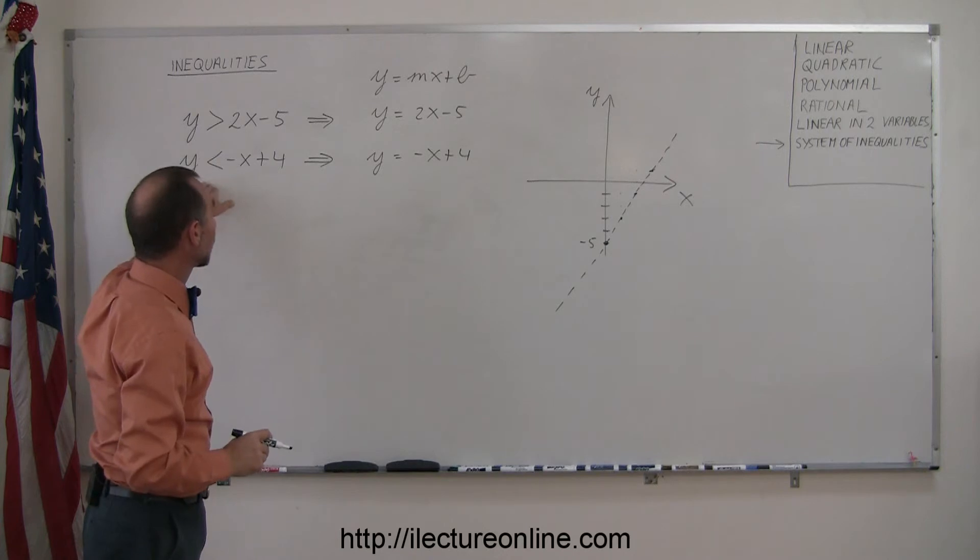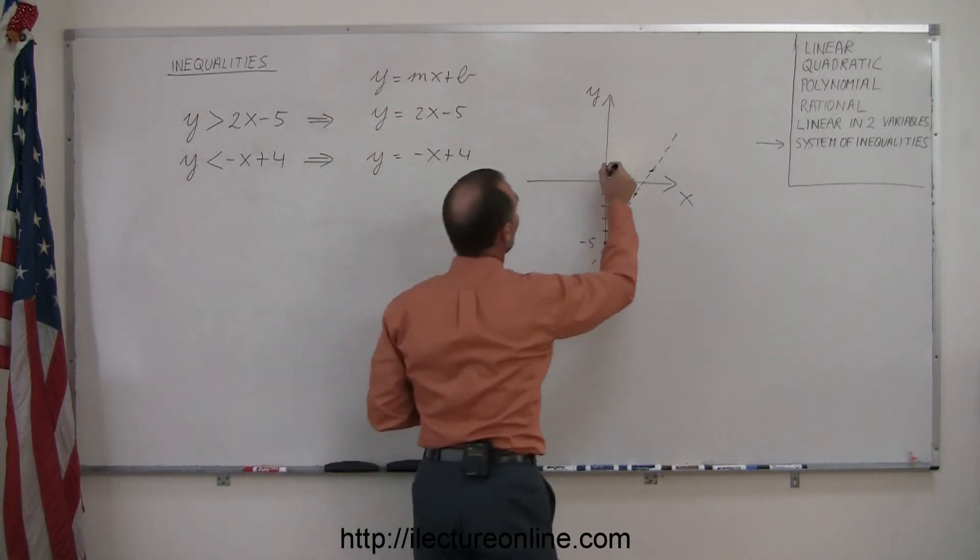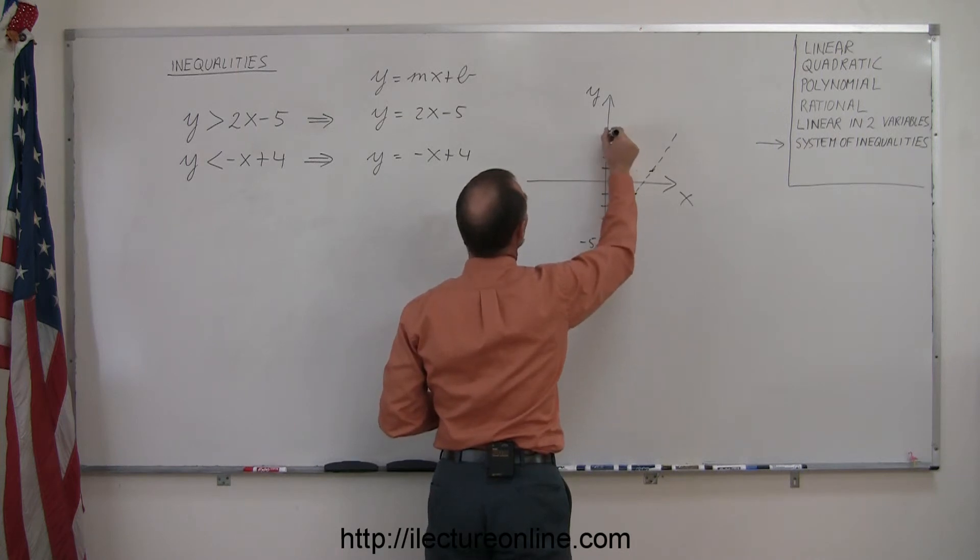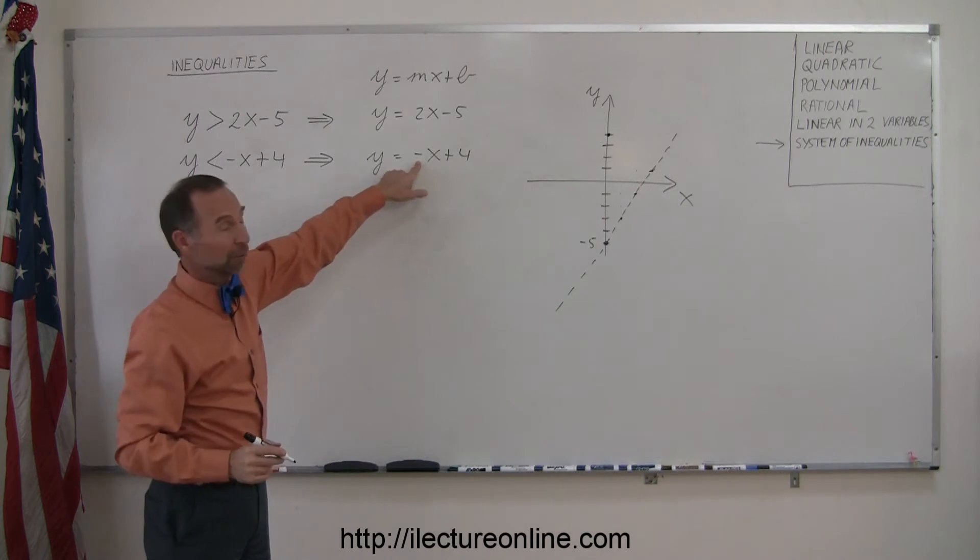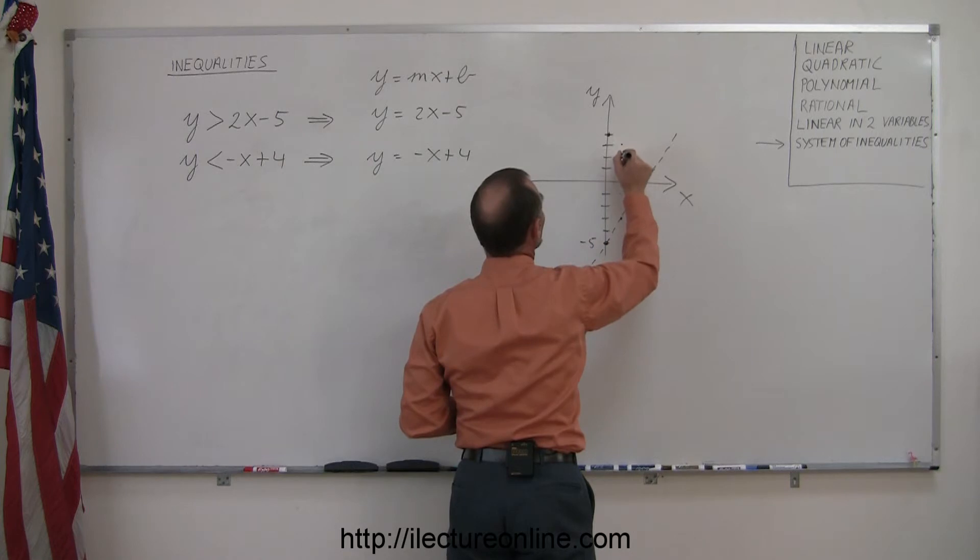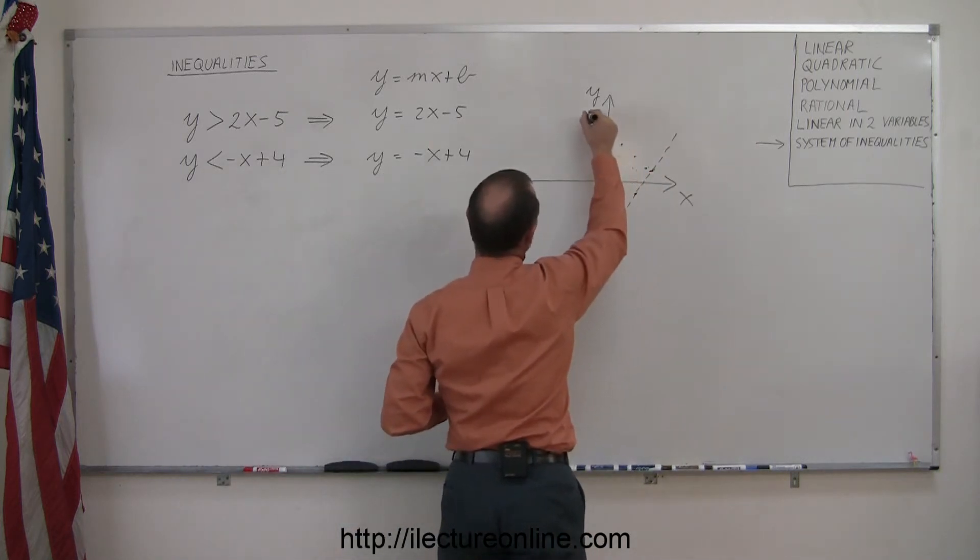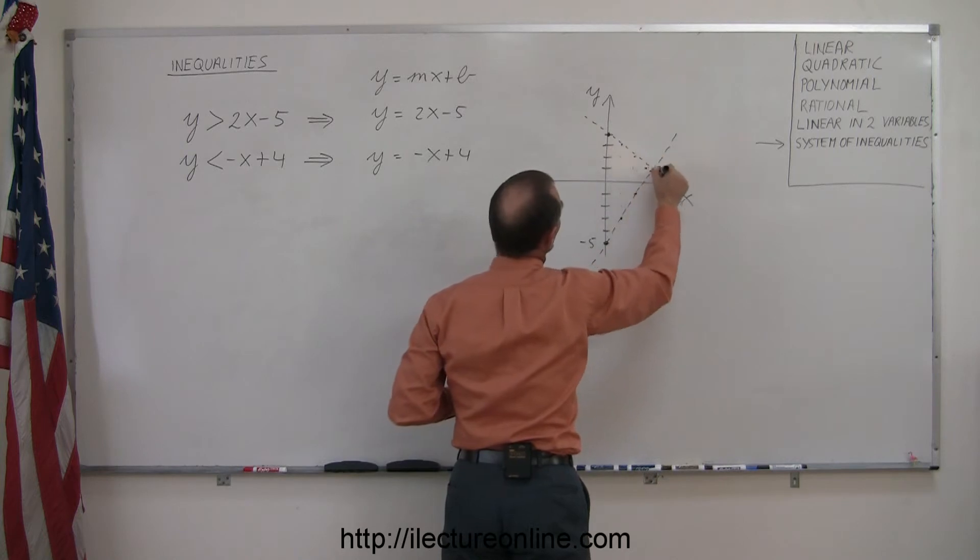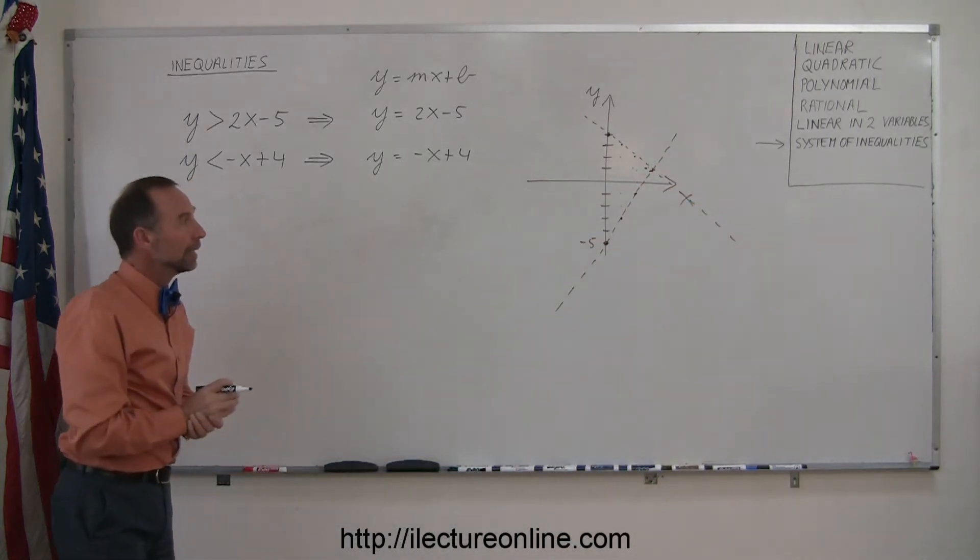The second inequality, the equivalent equation is y equals minus x plus 4. The intercept is a positive 4, 1, 2, 3, 4, right there. So we know that point lies on the boundary. And the slope is a negative 1, which means you drop 1 and run 1. So down 1, over 1, down 1, over 1, down 1, over 1, and so forth. And when you connect all those dots, again, not a solid line because there's no equal sign there. The boundary does not include, is not included in the solution.